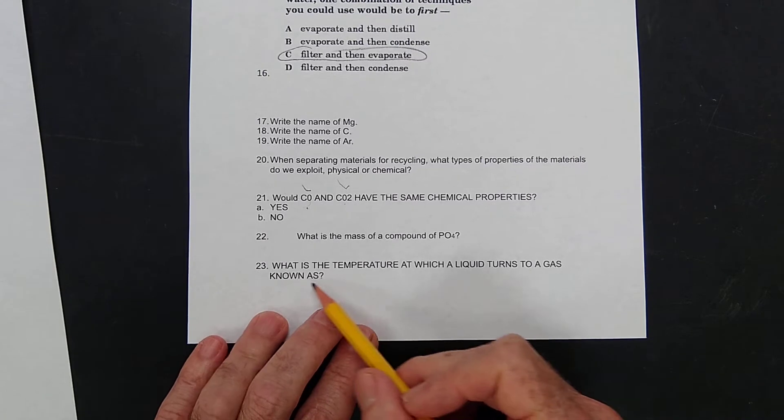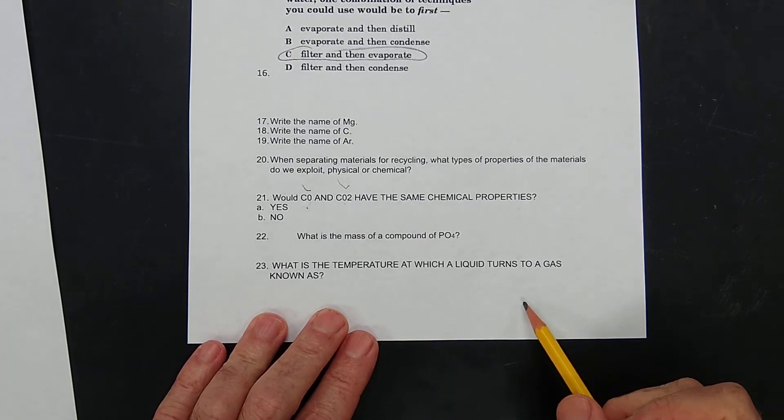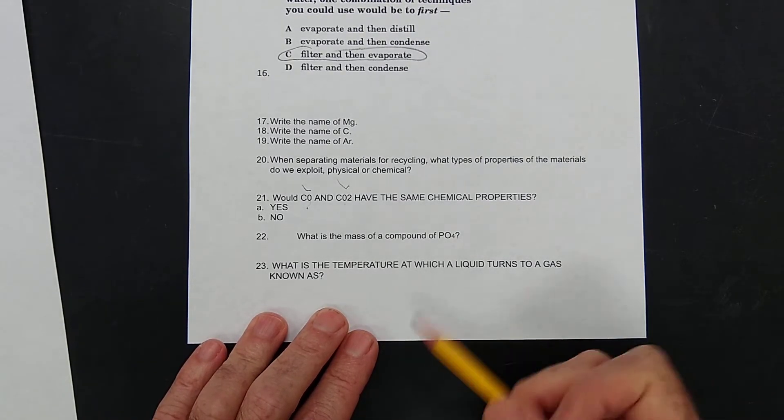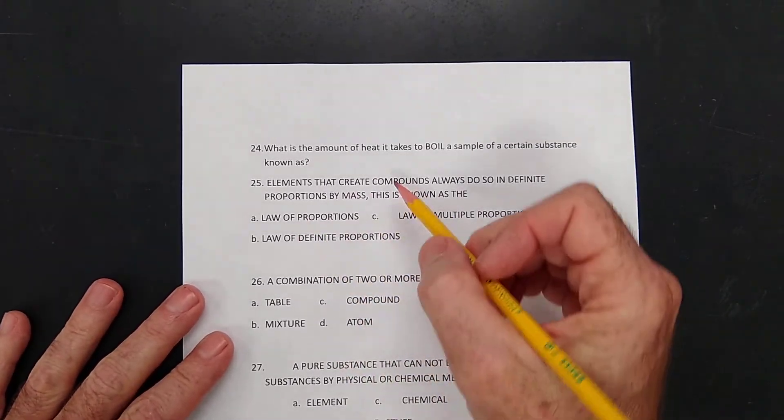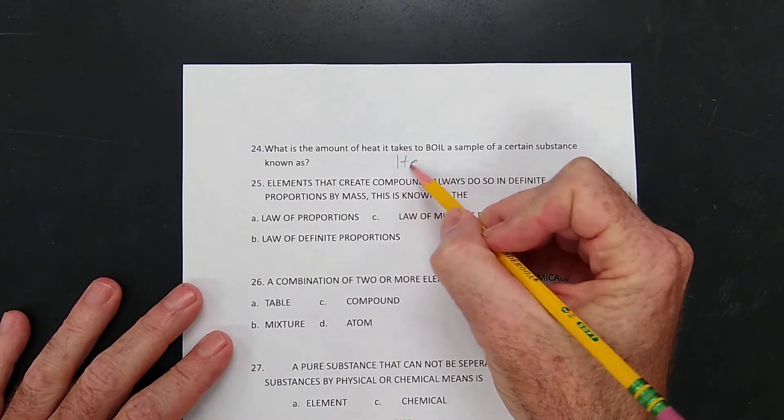Let's see. What is the temperature at which a liquid turns into a gas called the boiling point or the vaporization point? The amount of heat takes, that's the heat of vaporization.